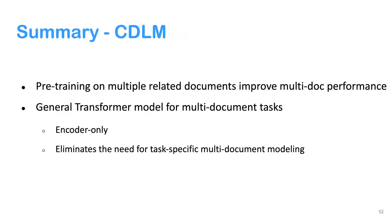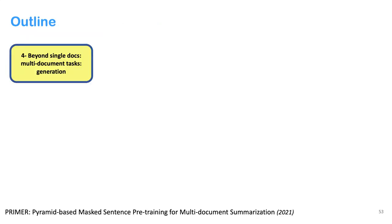To summarize: CDLM is a simple strategy for pre-training on multiple related documents. The resulting model is a general transformer that works for multi-document tasks, eliminating the need for task-specific multi-document modeling. It is encoder-only, so it doesn't support generation or summarization — but the next work, PRIMER, addresses that.